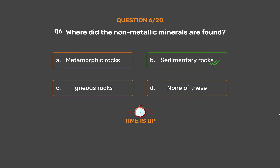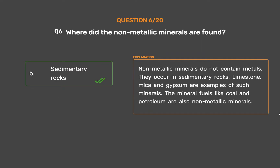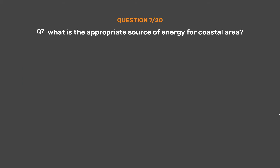The correct answer is Option B: Sedimentary rocks. Non-metallic minerals do not contain metals and occur in sedimentary rocks. Limestone, mica, and gypsum are examples of such minerals. The mineral fuels like coal and petroleum are also non-metallic minerals.